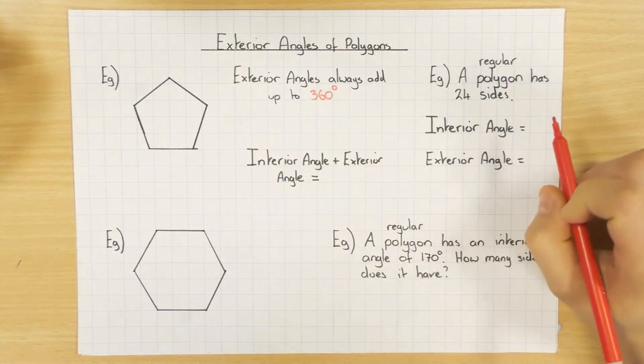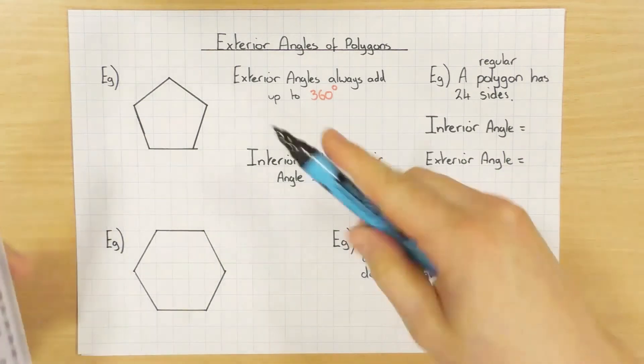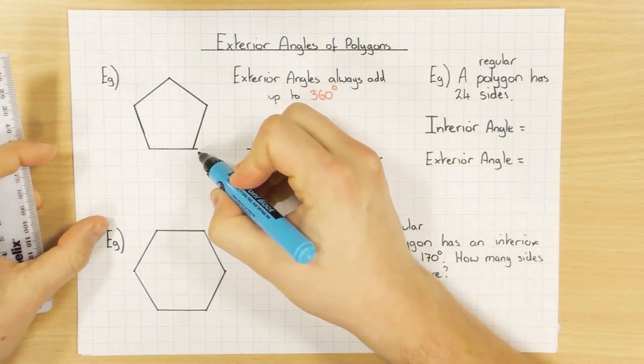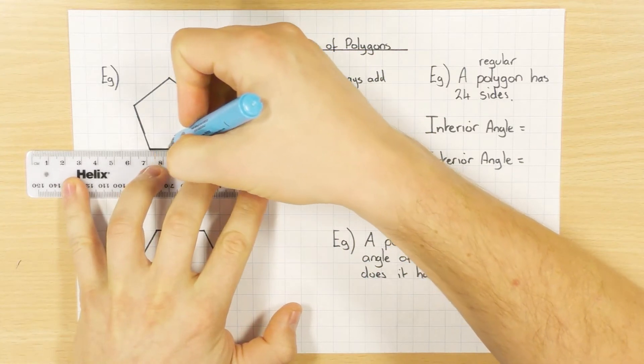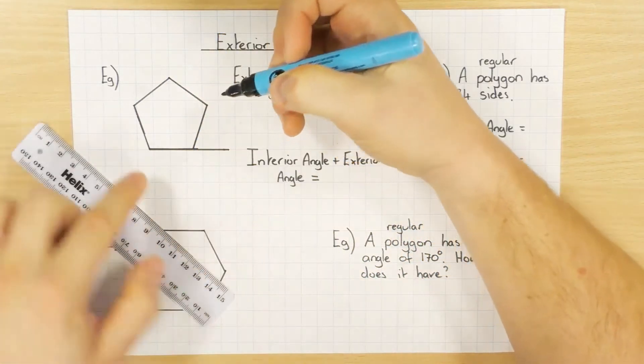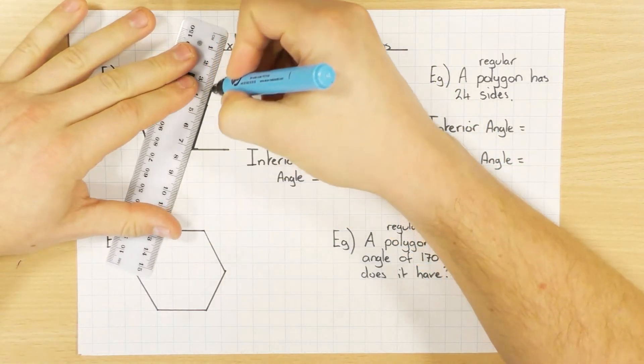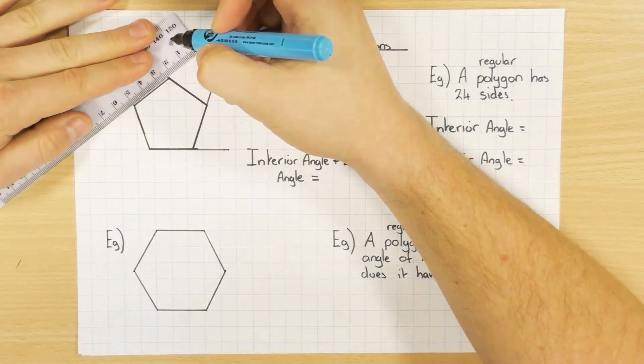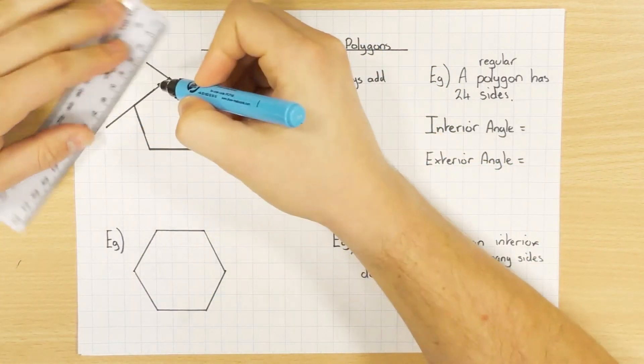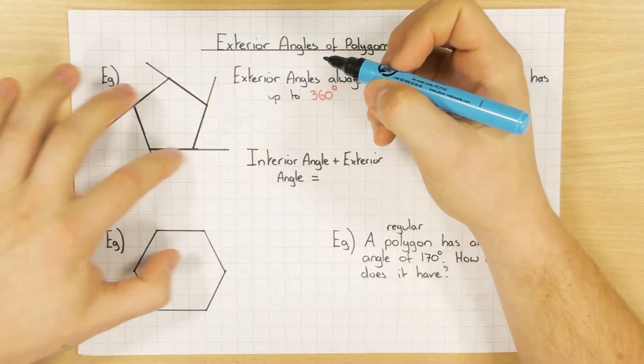What we're going to have a look at today is exterior angles. As you probably guessed, exterior means on the outside. However, it's not this angle all the way around the outside. What we have to do is take a journey around the shape and extend the sides.